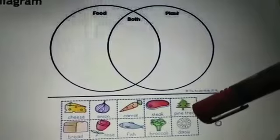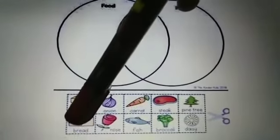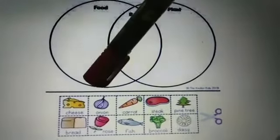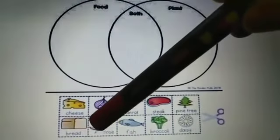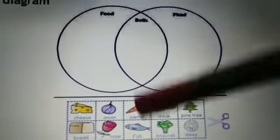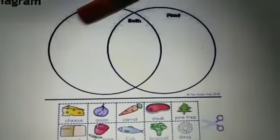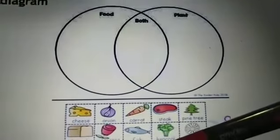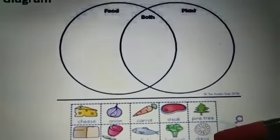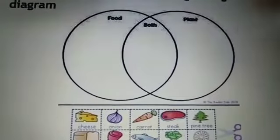This tree is a plant but not a food, so it goes in the plant-only part. Bread is a food but not a plant, so it goes in the food-only part. Fish is a food but not a plant, so it goes in the food-only part as well. Broccoli is both food and plant, so it goes in the overlap. And daisy is only a plant, so it goes in the plant-only part.